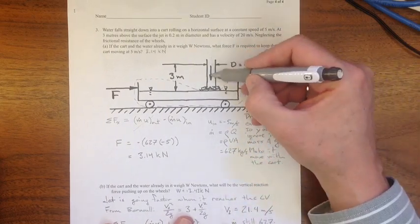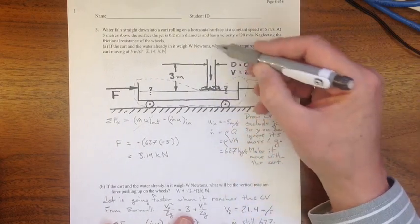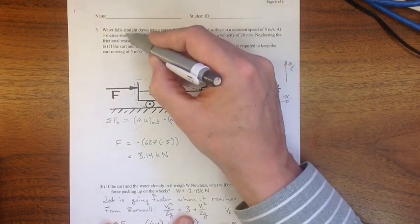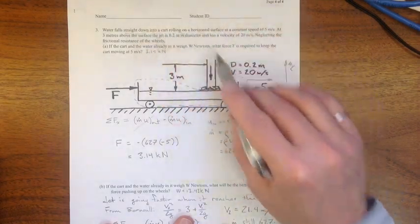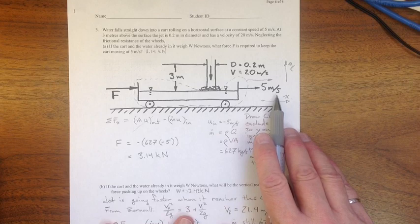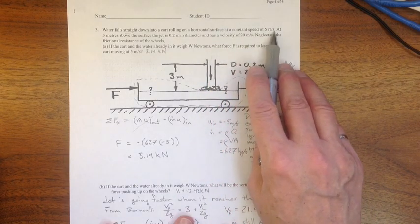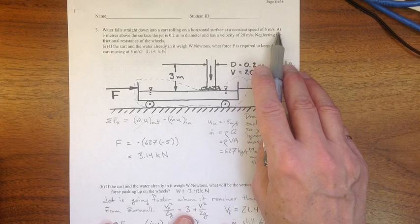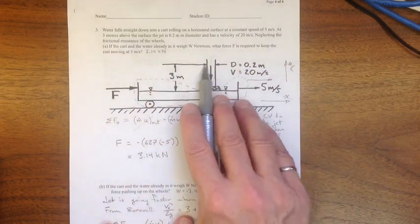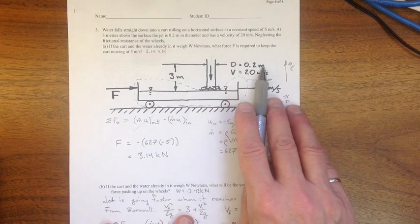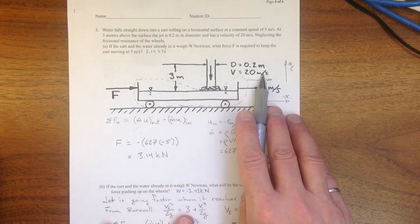Here's question three. It has water falling into this cart, falling straight down, it says so, and the cart is rolling on a horizontal surface at five meters per second, and it's a constant speed. And we know something about it up here at three meters above the surface in terms of jet diameter and velocity.